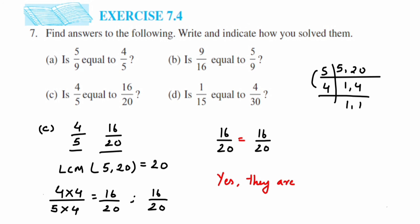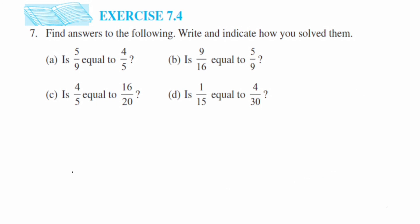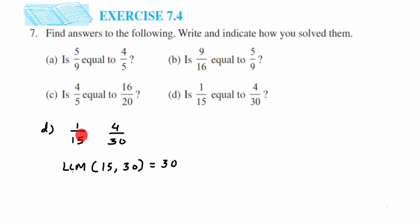Now moving to the last problem (d): we have 1/15 and 4/30. For 4/30, we can simplify by cancelling, or use the same LCM procedure. The LCM of 15 and 30 is 30. For the first number 1/15: multiply by 2 since 15×2 is 30. So 1×2 is 2 and 15×2 is 30, giving 2/30.